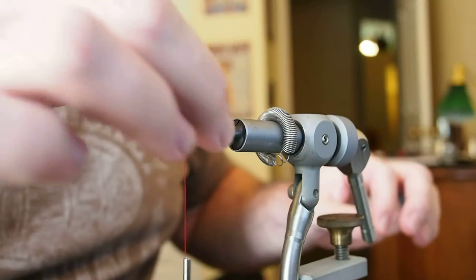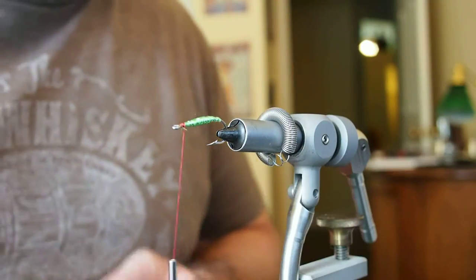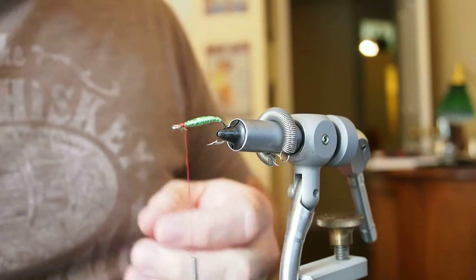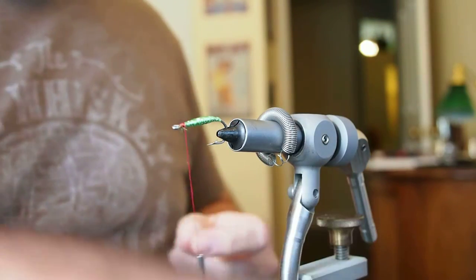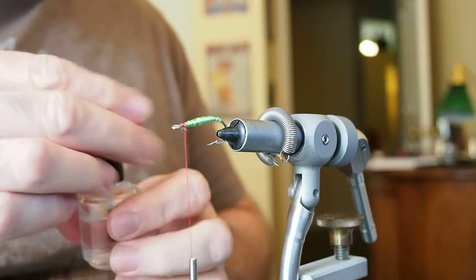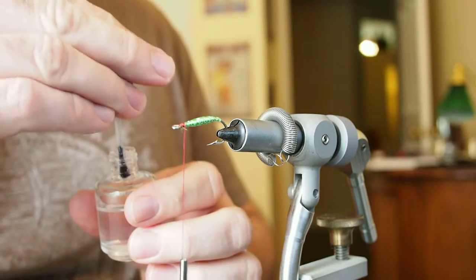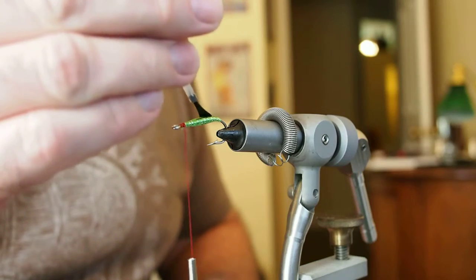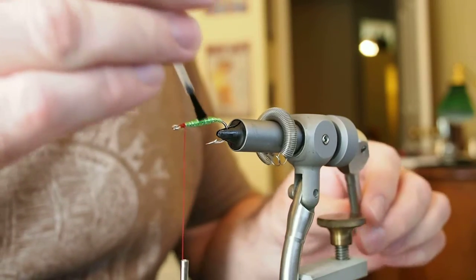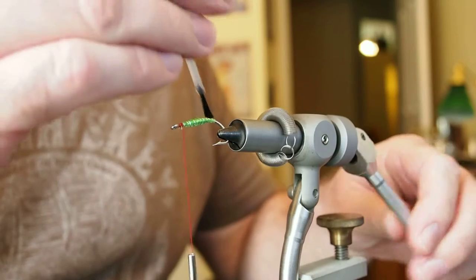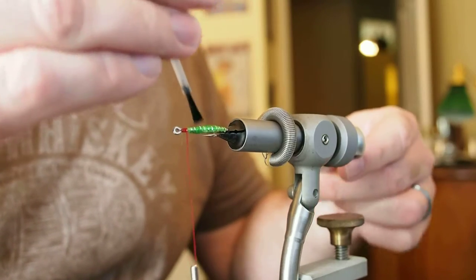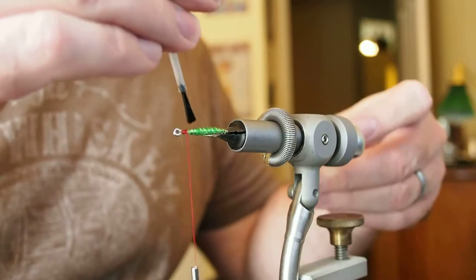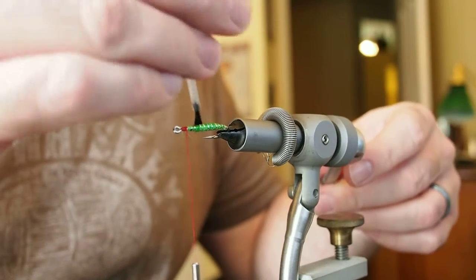Alright, so this might kill some purists, but that's too pretty of a body for me just to leave exposed like that. And shad have rough mouths, so before I know it, I'm sure that's going to be a frayed mess. So I like to take little Sally Hansen's here and just seal up that body. It soaks in very well to the floss and helps protect the tinsel and floss body. And seems not to change the color too much, but I think you'll end up with a much more durable fly like that.